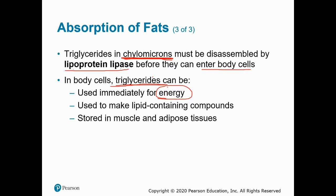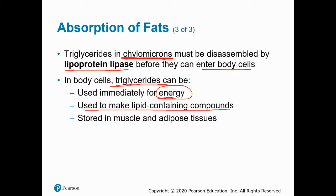Triglycerides can be used to make lipid-containing compounds, but we'd also use sterols to make vitamin D, sex hormones, or bile. Triglyceride is primarily used to supply energy. Triglycerides are the most abundant of the three lipids, especially in our food, and that's because we make cholesterol and phospholipids ourselves. If we eat fat, we're primarily eating it for triglycerides and for those essential fatty acids — the omega-3s and omega-6s — which make eicosanoids that facilitate inflammatory processes.